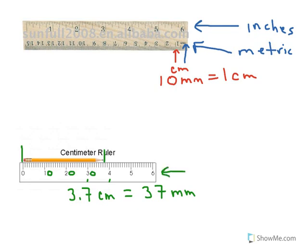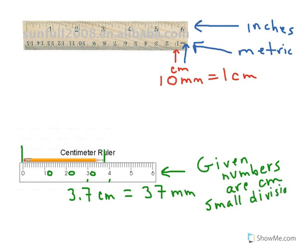Remember that your numbers that are given are centimeters and the small divisions are millimeters. As long as you remember that you can't go wrong making measurements using the metric system.